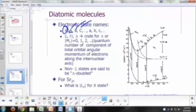You may have other electronic states that have a different multiplicity, and for those you use lowercase letters. So the first excited state with a different multiplicity compared to the ground state would be lowercase A.